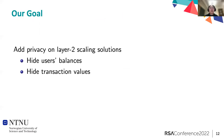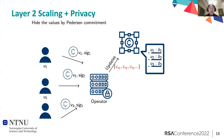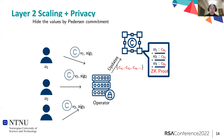What we are going to do is add privacy on top of these Layer 2 scaling solutions. We want to hide users' balances and also hide the transaction values. Our strategy is that the operator, instead of sending everything in plain text, hides these values using Pedersen commitments. Each user's balance on the smart contract will be represented by its Pedersen commitment. We also need a ZK proof computed by the operator to prove that the operator computed all the Pedersen commitments correctly.